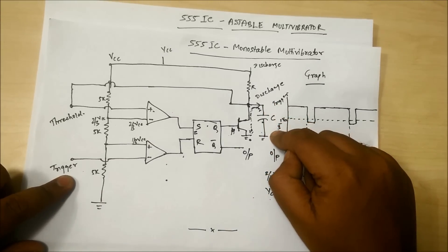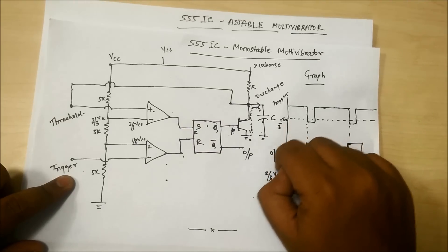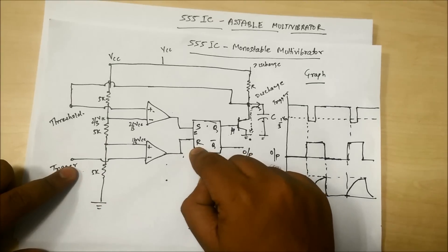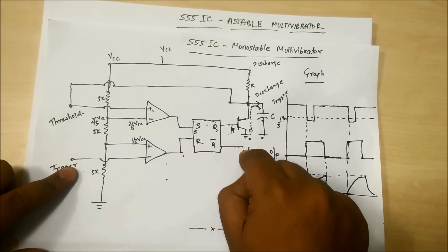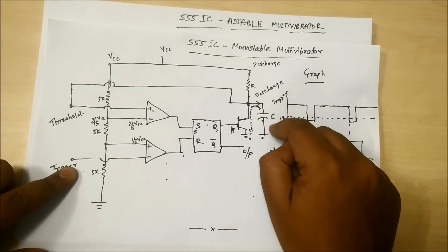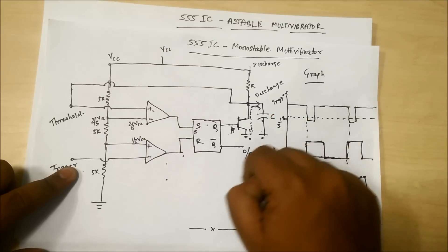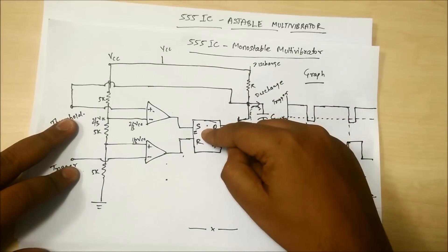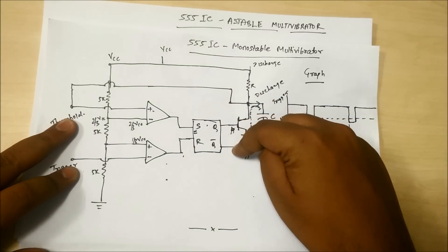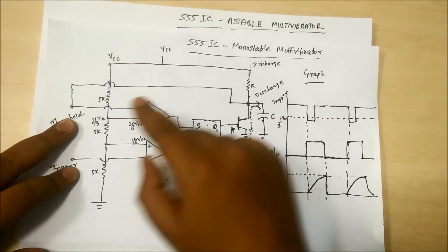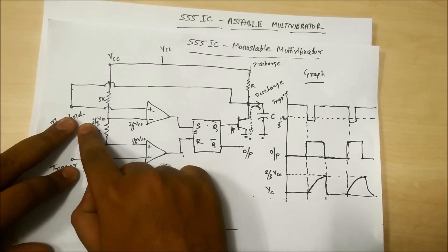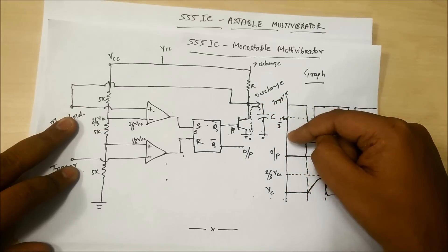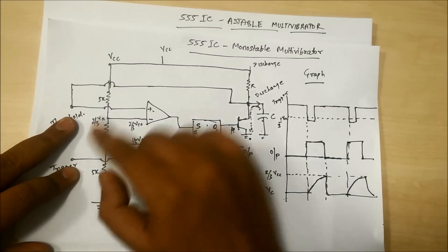When the capacitor discharges to less than 1/3 VCC, the trigger becomes active, the flip flop will be reset, output will be high, and Q will be low, so the capacitor will start charging. As it becomes 2/3 VCC, the threshold becomes active, set becomes high, Q becomes high, and the capacitor starts discharging again. It will discharge to a value less than 1/3 VCC which activates the trigger again.